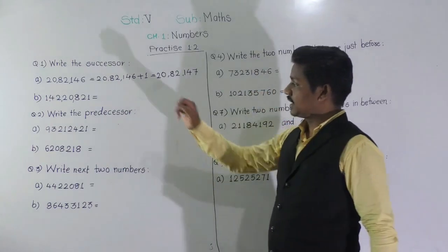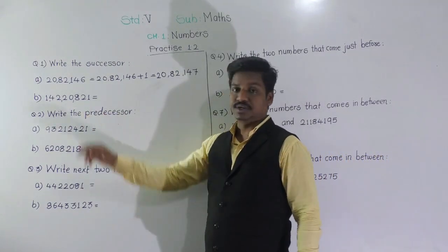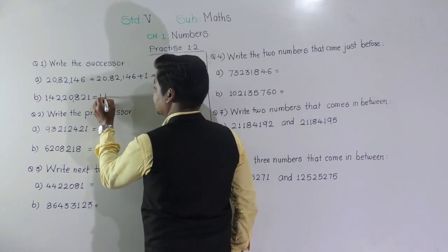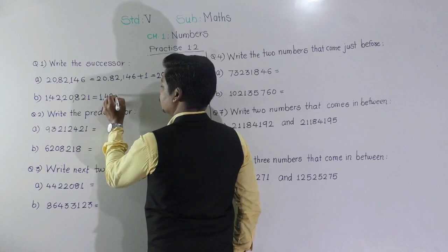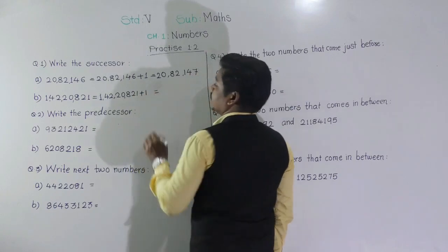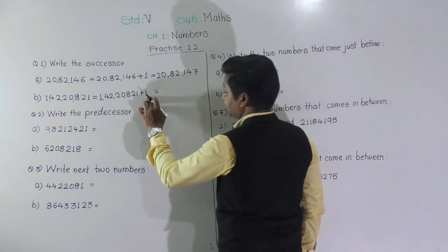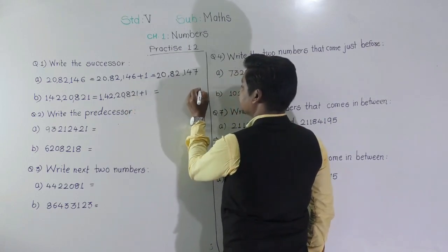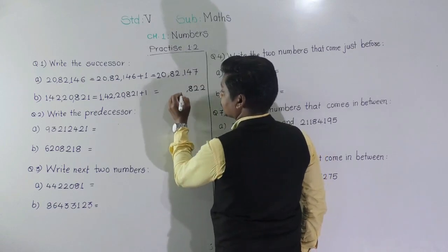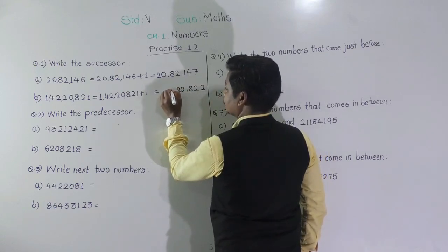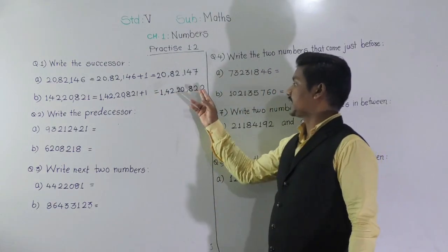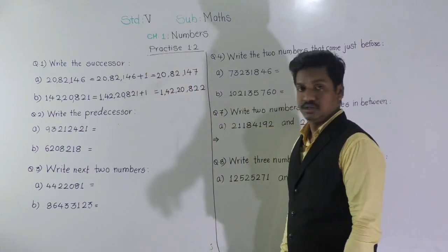Next: 42,20,821. To obtain the successor of this number, we need to add 1 here. When we add 1 at the ones place: 1 plus 1 gives 2, and all remaining digits stay as they are. So 42,20,822 is the successor of this number.